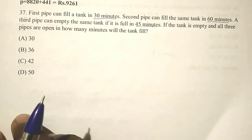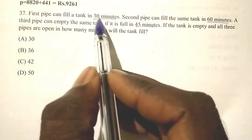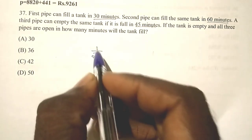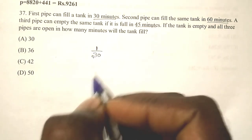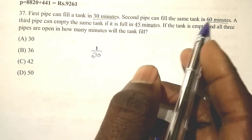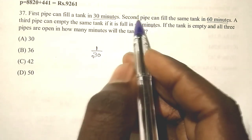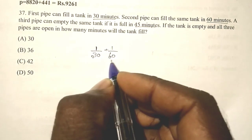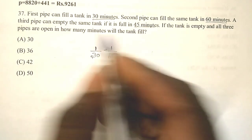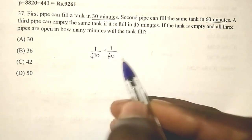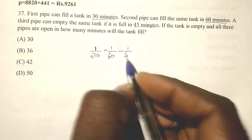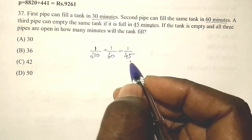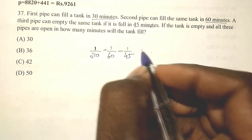The first pipe fills 1/30 of the tank per minute. The second pipe fills 1/60 of the tank per minute. The third pipe empties the tank, so it contributes minus 1/45 per minute. So the combined rate is 1/30 plus 1/60 minus 1/45.